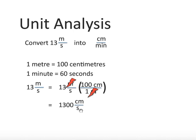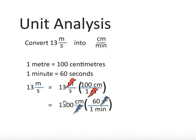But we don't want centimeters per second — we want centimeters per minute. So we're going to multiply by another fraction. The question is: do I write 1 minute over 60 seconds, or do I write 60 seconds over 1 minute? We write 60 seconds over 1 minute, because we're trying to get centimeters per minute. The seconds cancel, and we're left with 1300 centimeters times 60 divided by 1 minute.